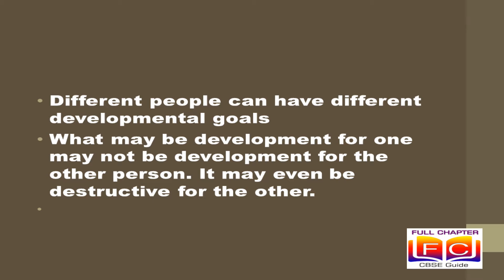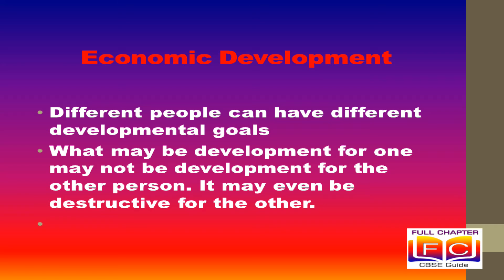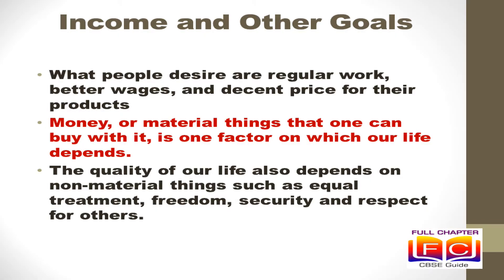Money or material things that we can buy with it is one factor on which our life depends. However, the quality of our life also depends on non-material things such as equal treatment, freedom, security and respect for others. These goals cannot be measured but are much important. For development, people look at a mix of goals like material as well as non-material things. The developmental goals are not only about better income but also about other important things in life.